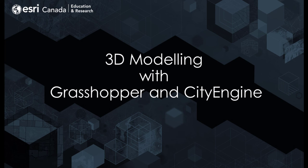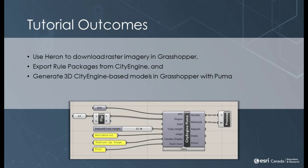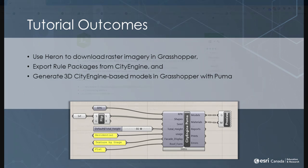Welcome to the tutorial on how to use Rhino and Grasshopper with CityEngine. Today we're going to be looking at one of Esri's newest plugins called Puma. Puma is a plugin that enables CityEngine rules to be imported within Rhino and Grasshopper. We're also going to look at another plugin called Heron that allows raster imagery to be imported from ArcGIS Online into Rhino.